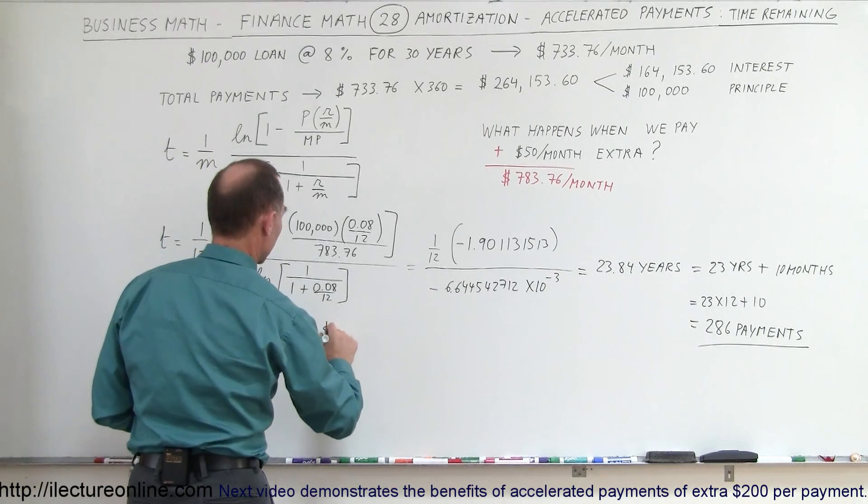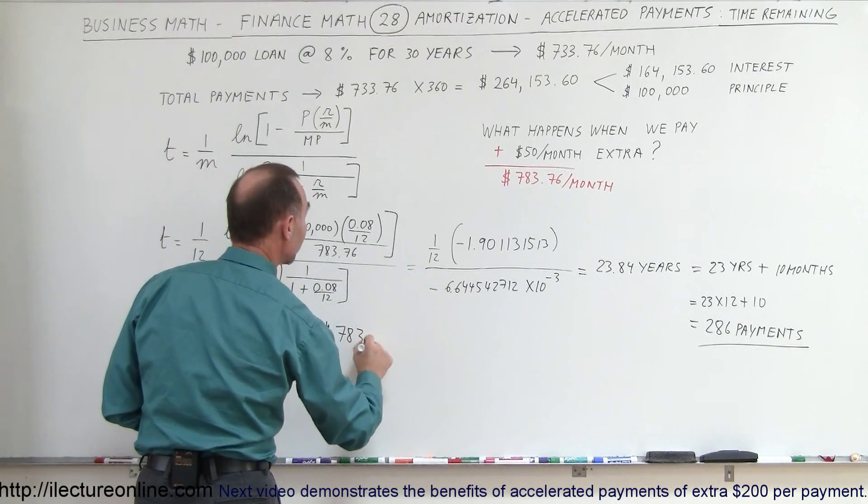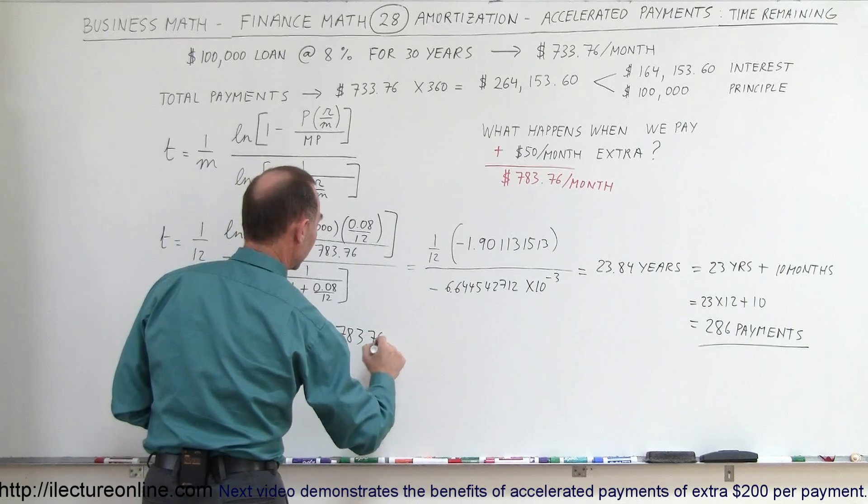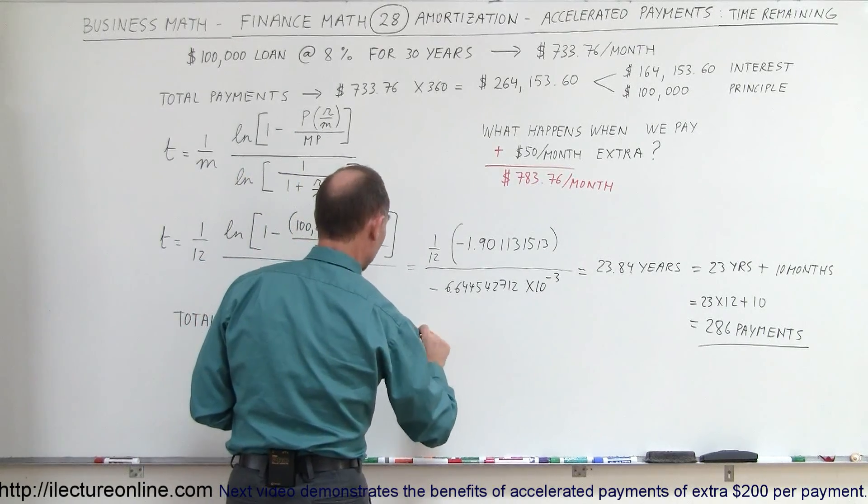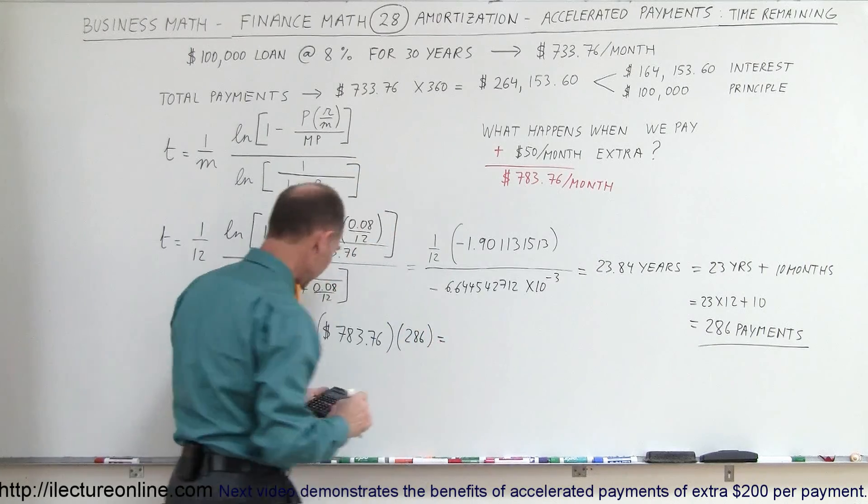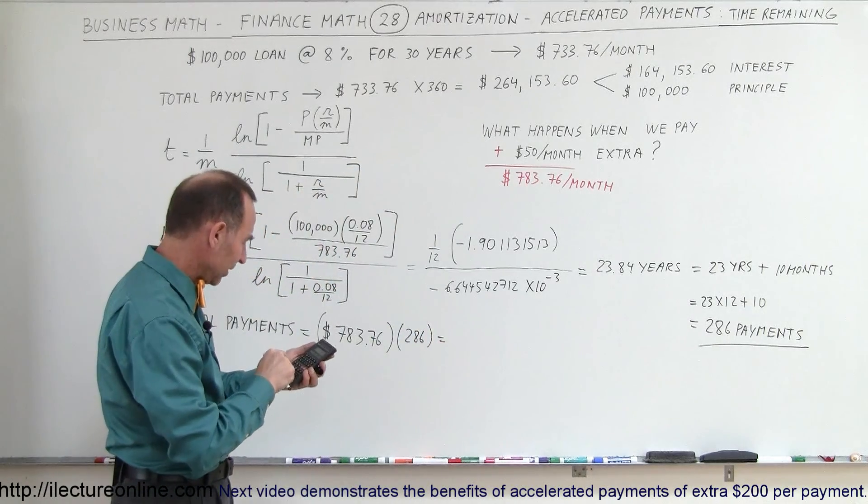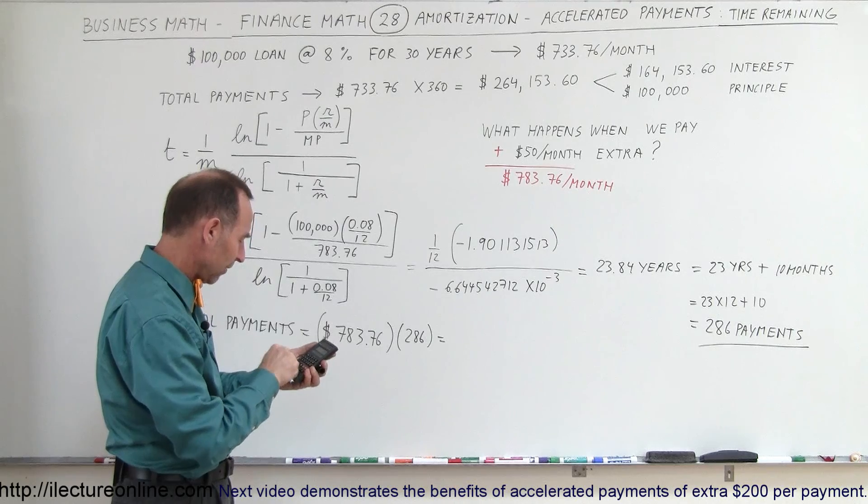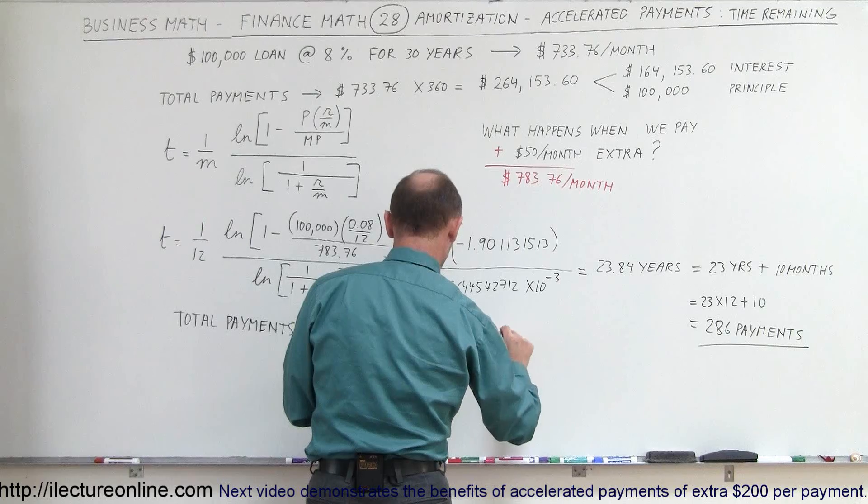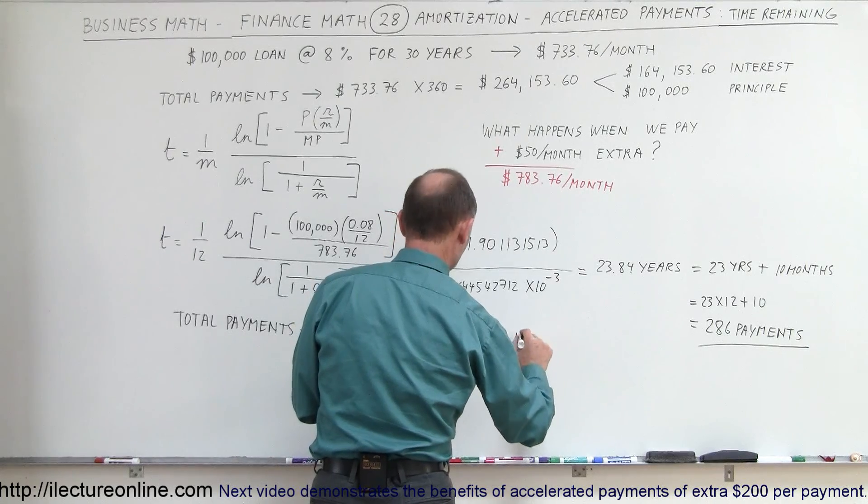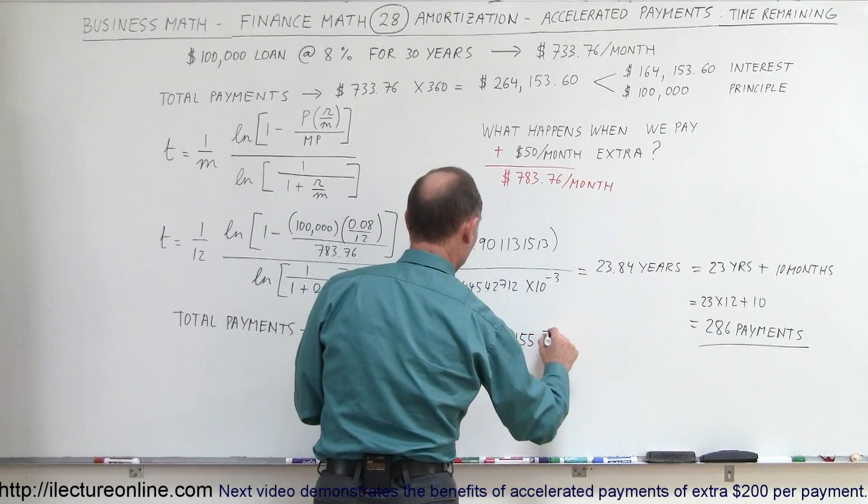well, we increased it to $783.76, and we're going to multiply that times 286, so times 783.76 equals, and so now we're paying a total of $224,155.36,